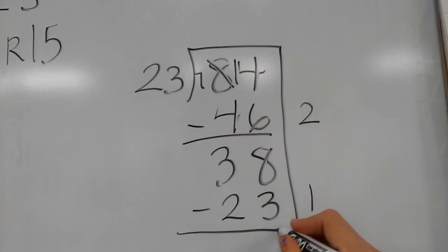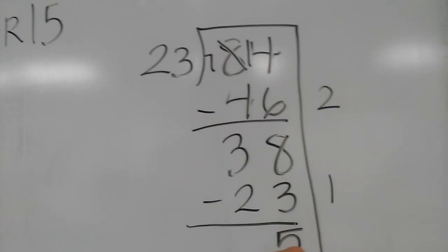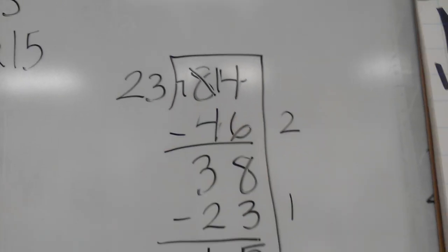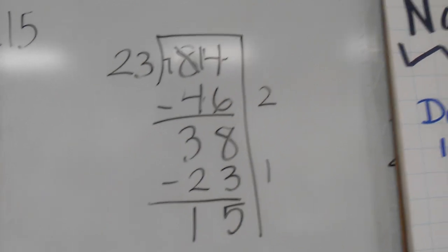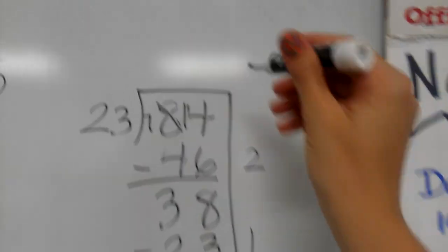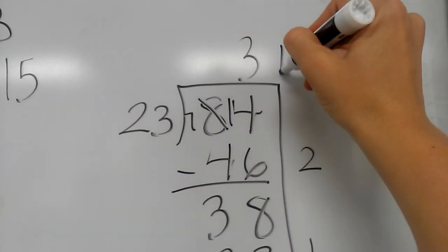8 minus 3 is 5. 3 minus 2 is 1. So this is smaller than 23. So that means that is my remainder. My answer is right here. So my answer is 3 remainder 15.